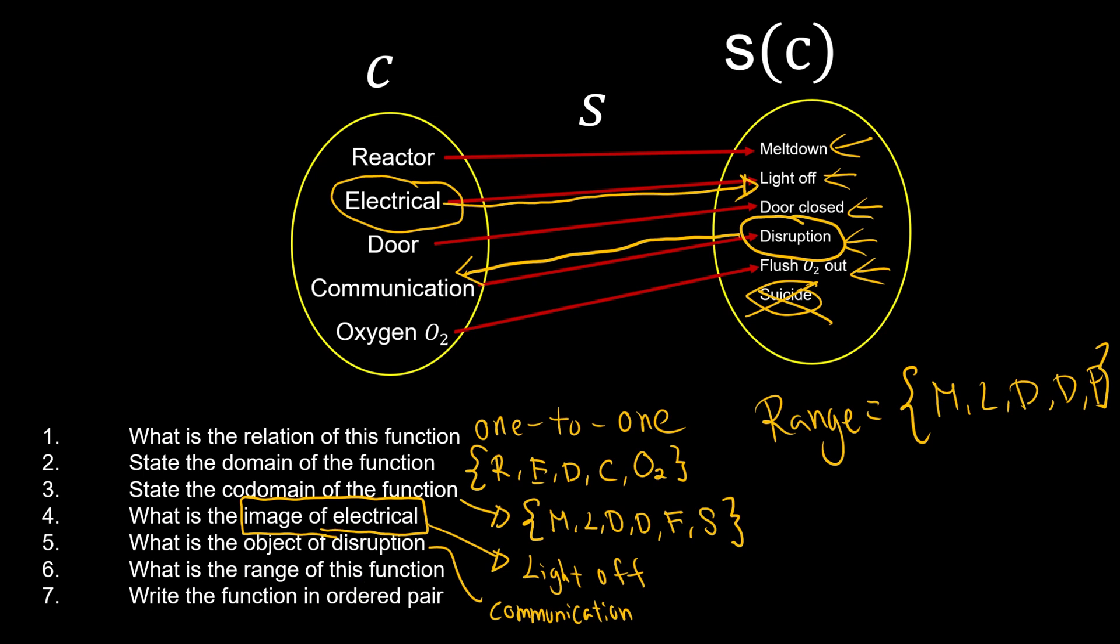What is the function in the order pair? So they want us to write down in the order pair. So we're going to write a big bracket for set. Then we're going to pair it up. Reactor pairing with meltdown. So reactor, meltdown. Second pairing, electrical with light off. Third pairing, door and door close. Communication and disruption. Oxygen to flush out. Once we're done, remember to close your set. So we're done for your quiz.